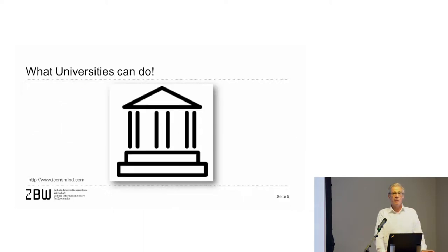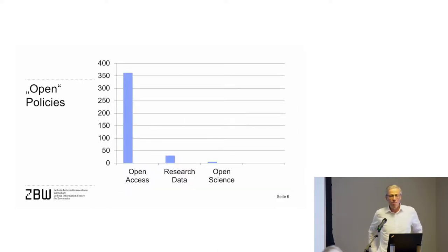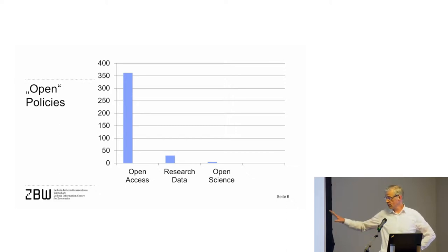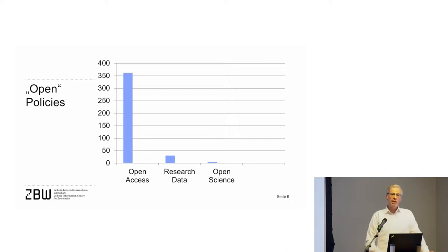Let's start with what universities can do to promote and foster the open science movement. I checked for open policies in German universities. We have about 360 universities and research organizations which have an open access policy — a policy in which they recommend their scientists, for example, to publish green or gold open access.